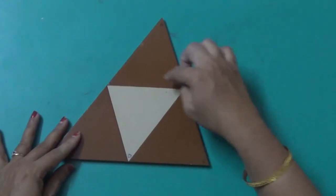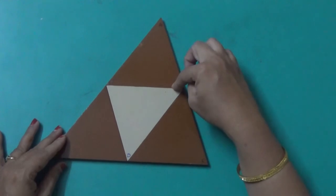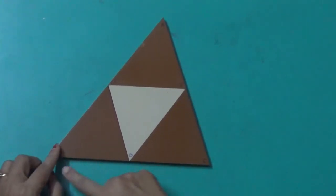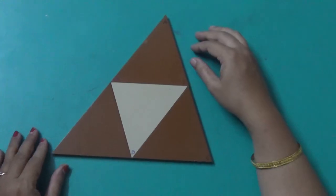The midpoints of any two sides, if we join the line segment, then that is parallel to the third side and half of it. Thank you.